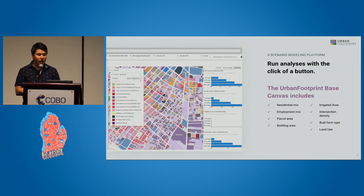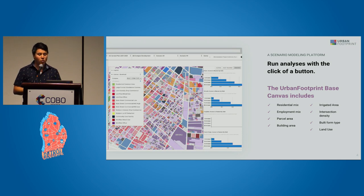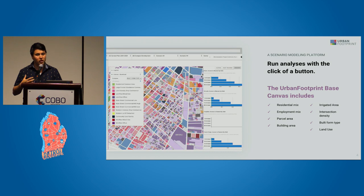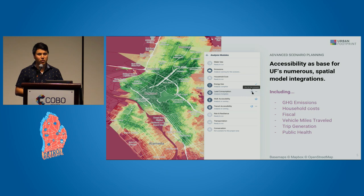How does that relate to Urban Footprint? Urban Footprint is a scenario modeling platform for urban planners. You can draw different types of land use or transit futures and compare the performance of the two using our national parcel canvas layer, which includes a bunch of metadata at a very fine grain — parcel-level accurate residential employment mix, building typology, built form, and land use types. You can compare different scenarios through summary statistics or our suite of modules.